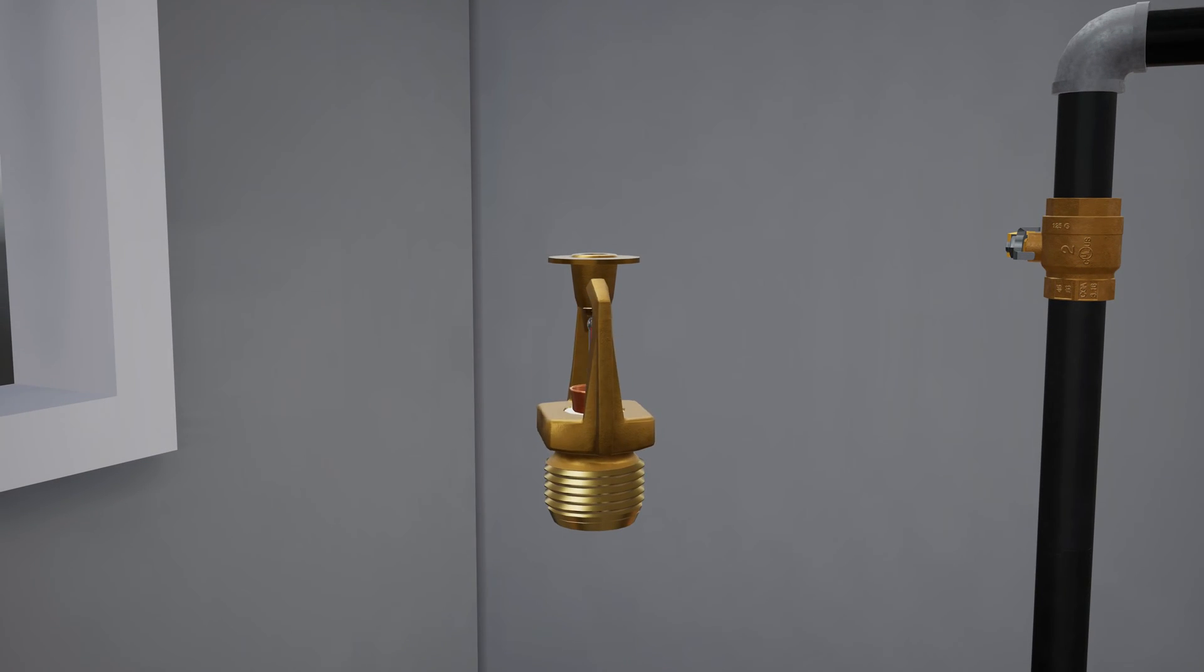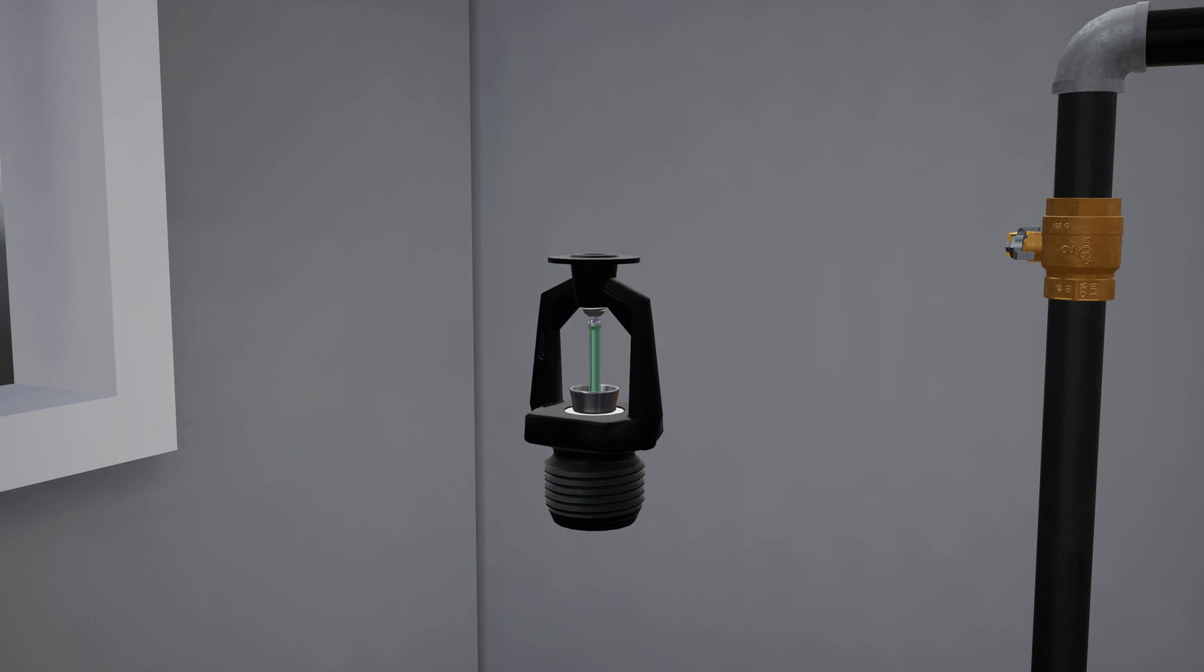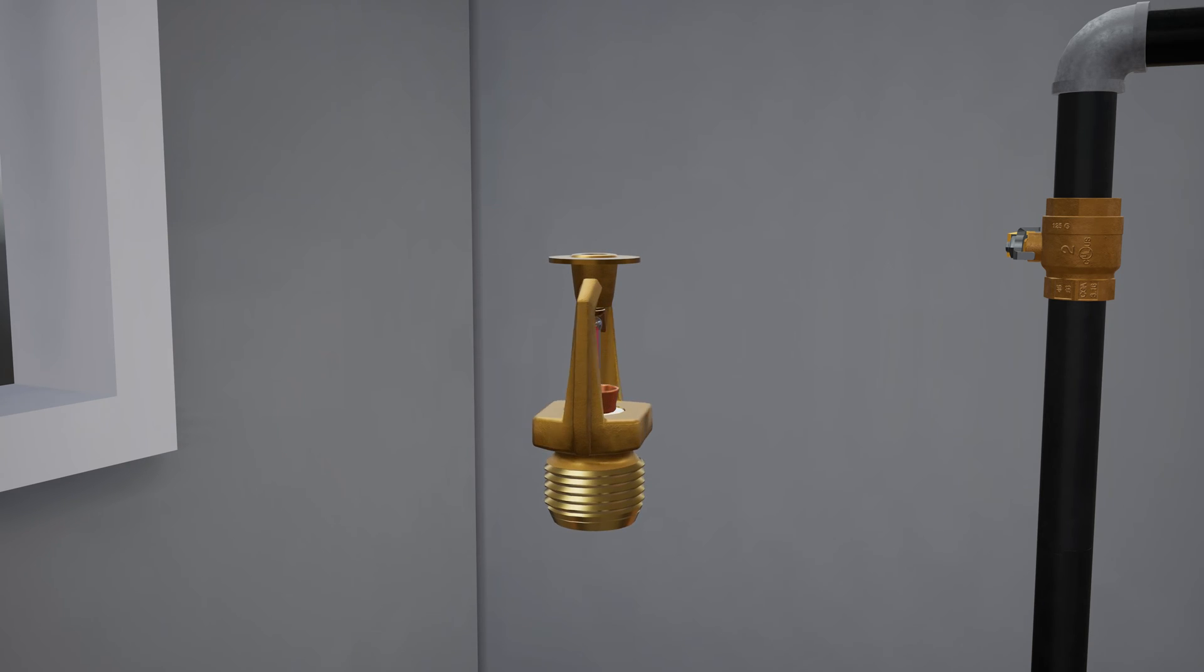The Viking BK800 is a fixed temperature release that is installed along a pilot line to activate deluge pre-action systems. It is available in a range of finishes and temperature releases to suit various applications. Due to its specialized design, it has spacing advantages over standard sprinklers in several situations.